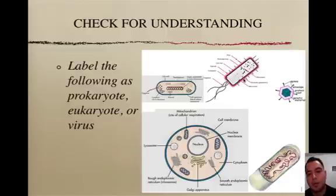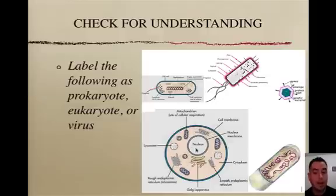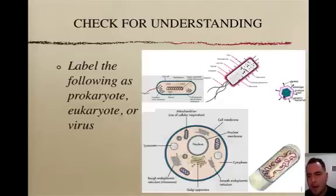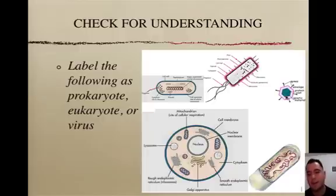This one has a cell wall, so it is a cell — no nucleus, DNA all over the place, so it's another prokaryote. Then we see a cell with a nucleus and membrane-bound organelles, giving it away as a eukaryote — specifically an animal cell. And this one: no cell, no cell wall, no cell membrane — looks very small, so it's a virus.